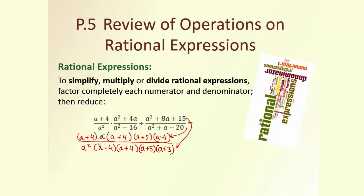For example, I can reduce this a with one a from the bottom — notice I am just crossing the exponent, not the whole factor. Then (a + 4) appears in both numerator and denominator, so we reduce it. The other common factors are (a − 4) and (a + 5). What's left is the simple fraction (a + 4) over a(a + 3).